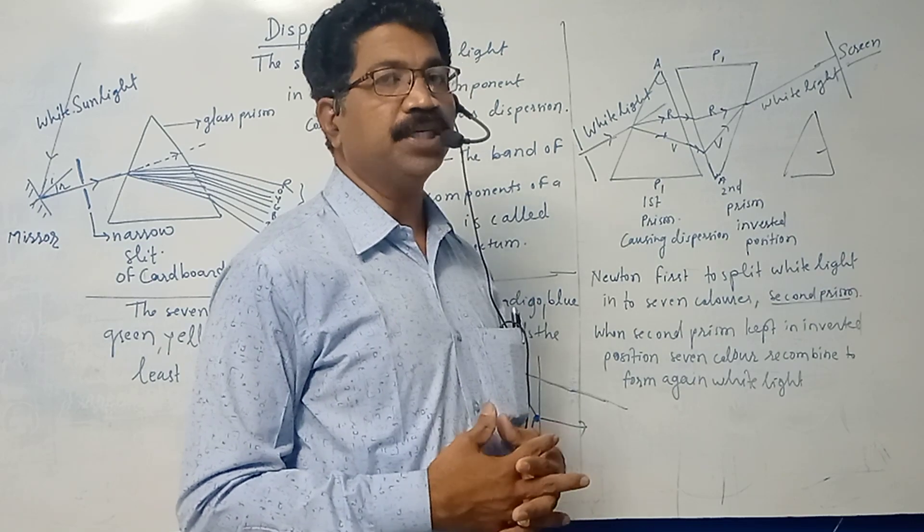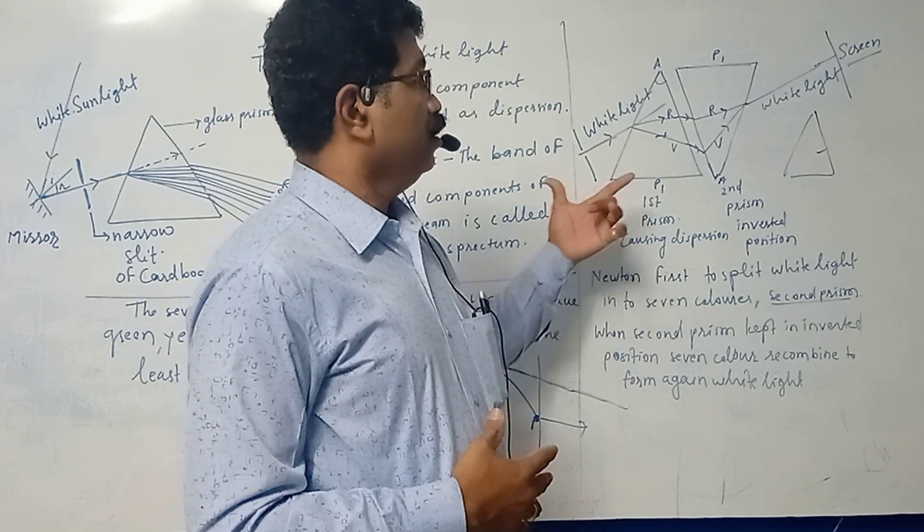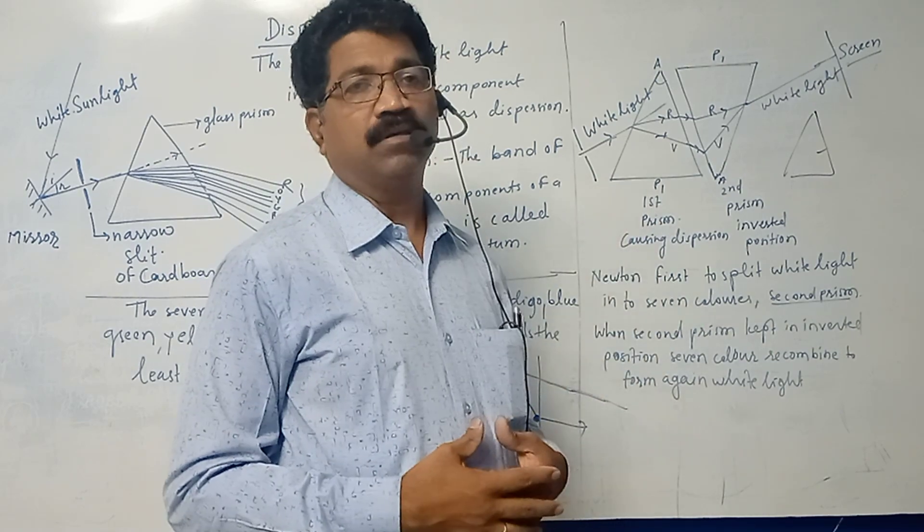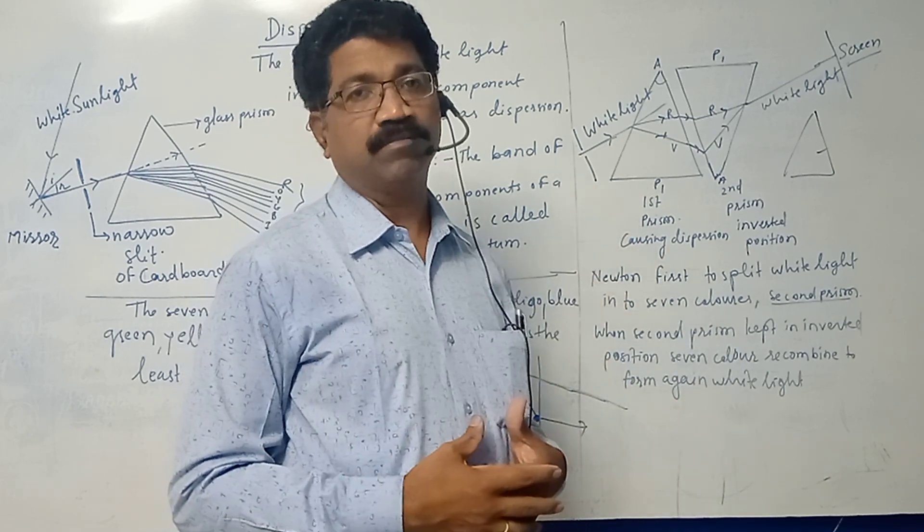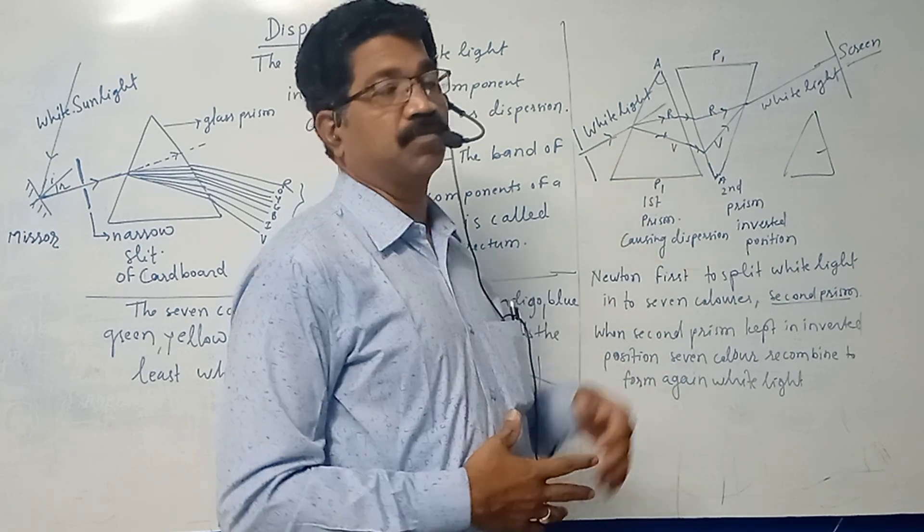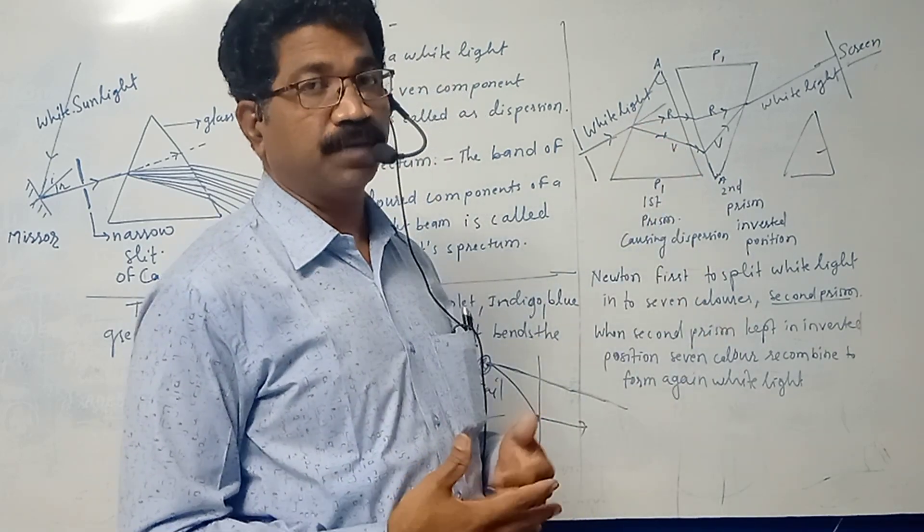Then we have seen the dispersion - you will observe dispersion. Which color is dispersed most? The red color is dispersed least, while violet color is dispersed most. So the question may arise in your mind: why are danger signals red in color?